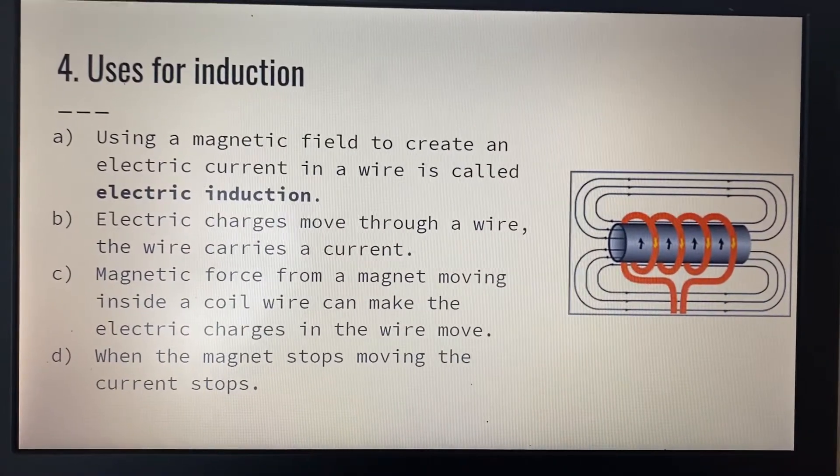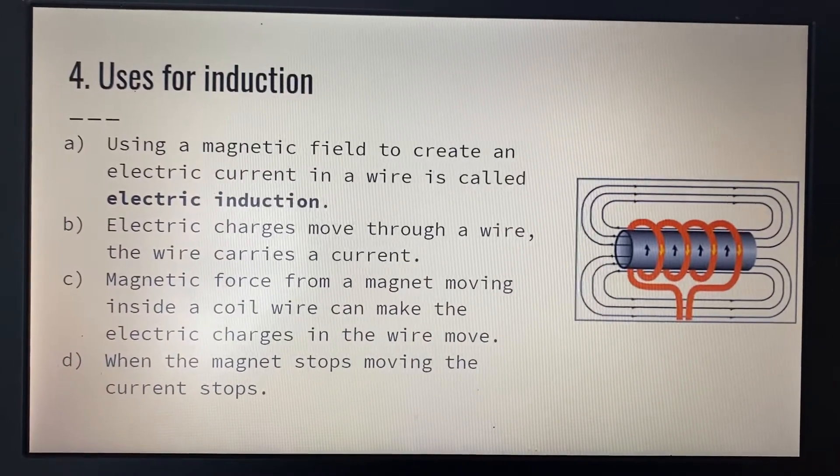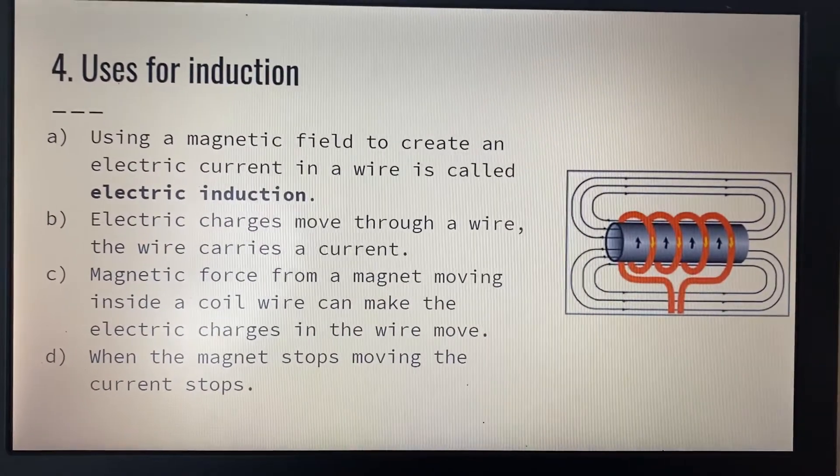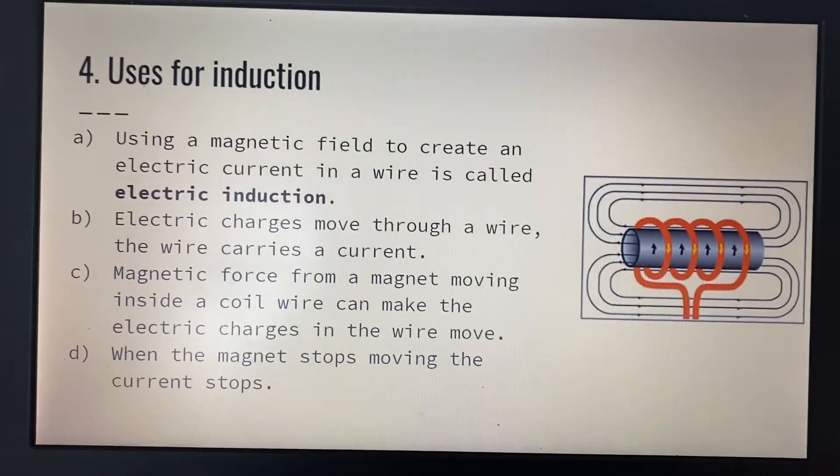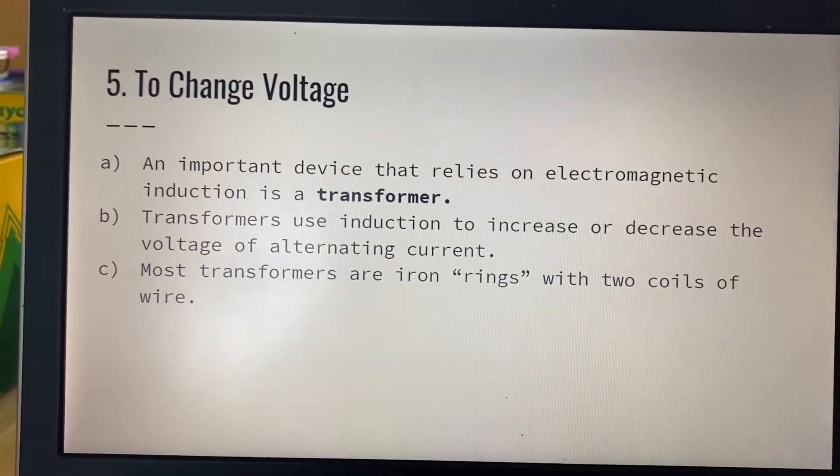Magnetic force from the magnet moving inside a coil can make the electric charges in the wire move. When the magnet stops moving, the current will stop. So this is how we actually induce an electric field.